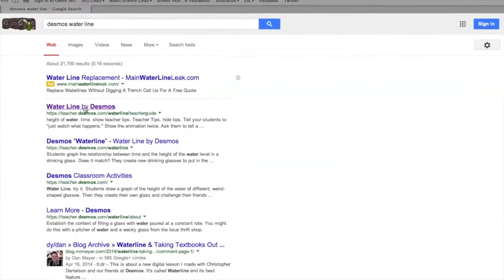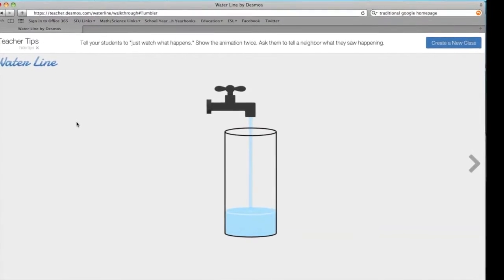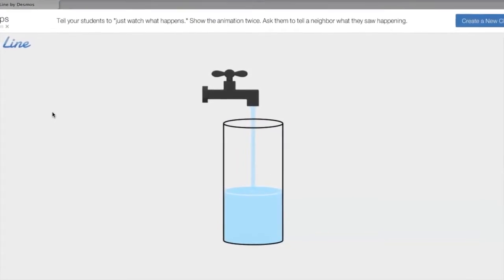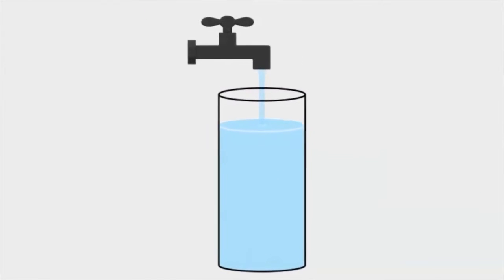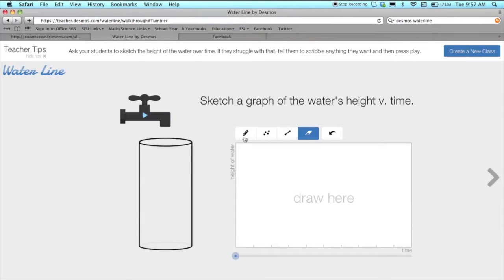Maria and I decided to use the waterline activity with Desmos. Students watch an animation of a cylindrical beaker fill up with water and are then asked to graph the height of the water as a function of time.